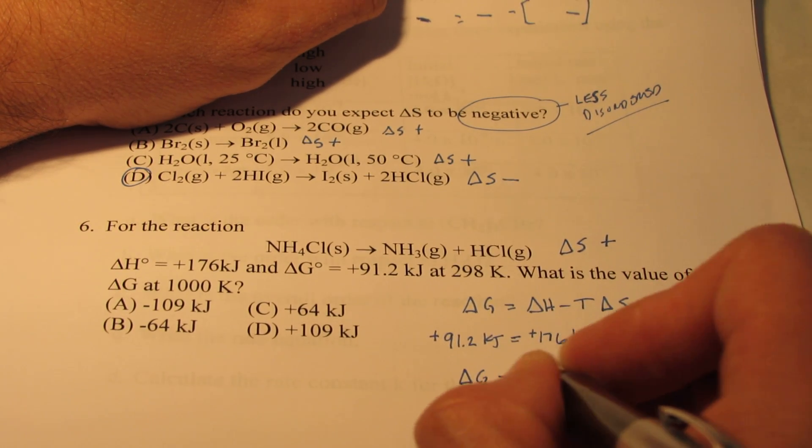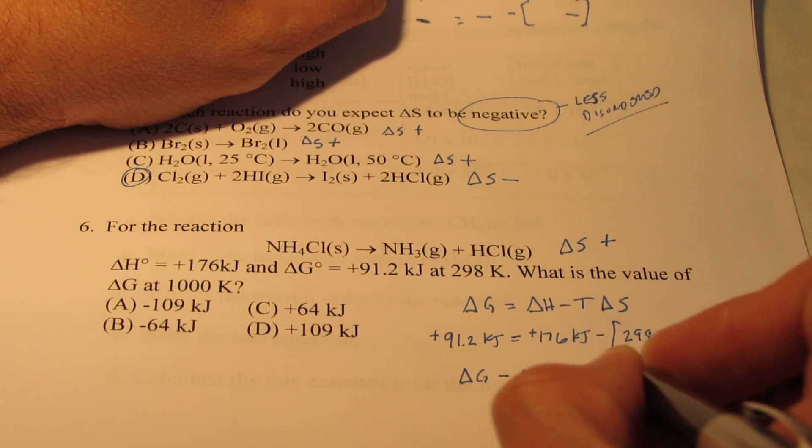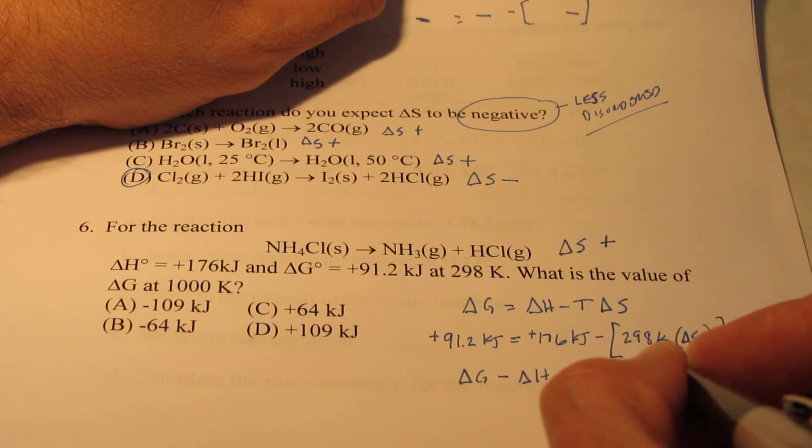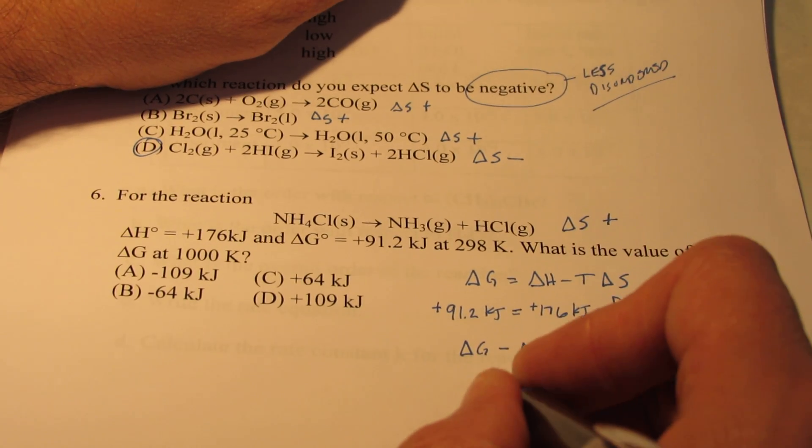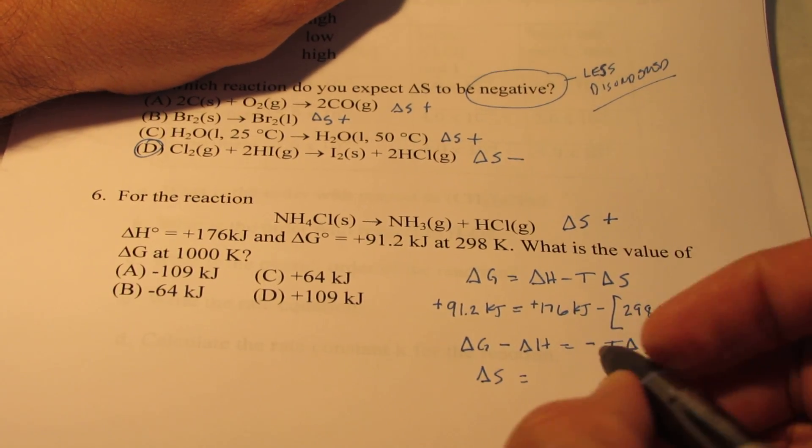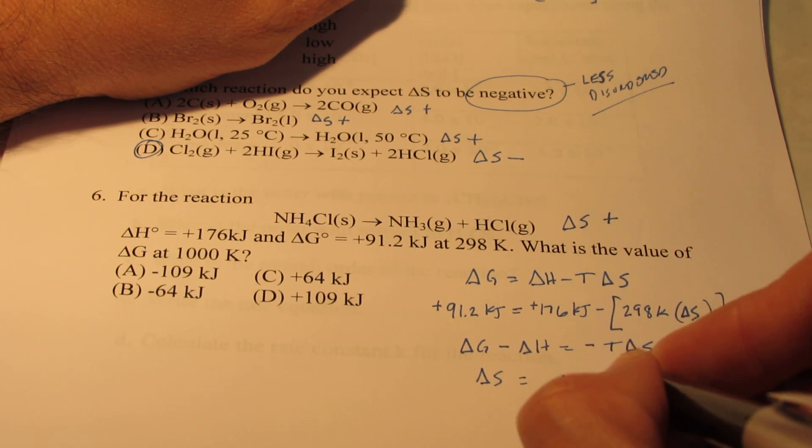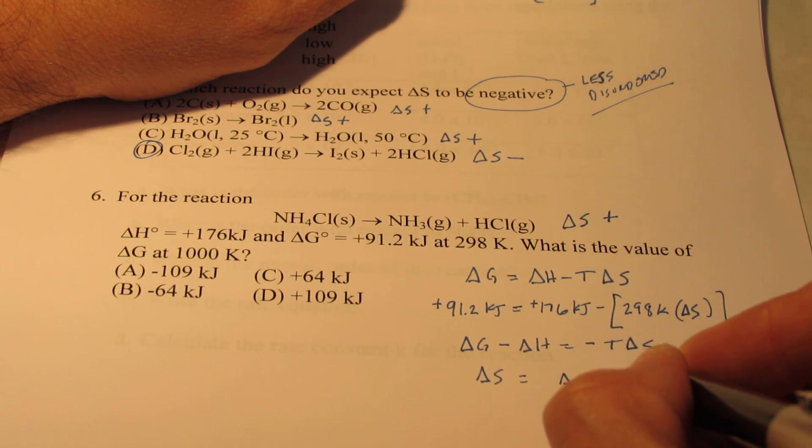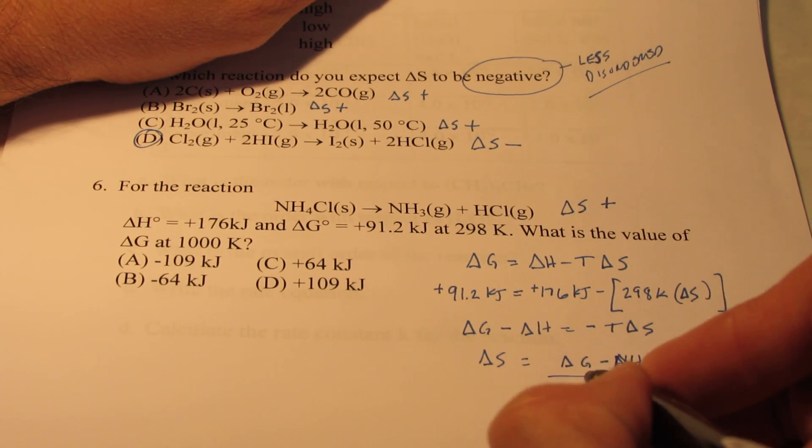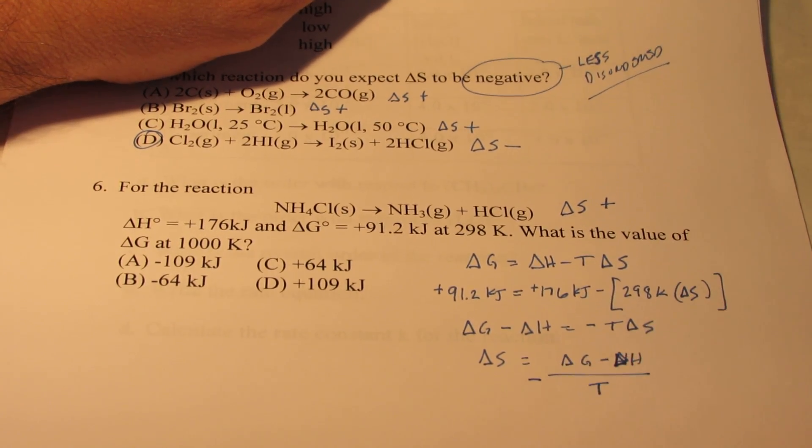Delta G minus Delta H would be equal to negative T Delta S. And if I wanted to solve for Delta S, that would be Delta G minus Delta H all over the negative of the temperature.